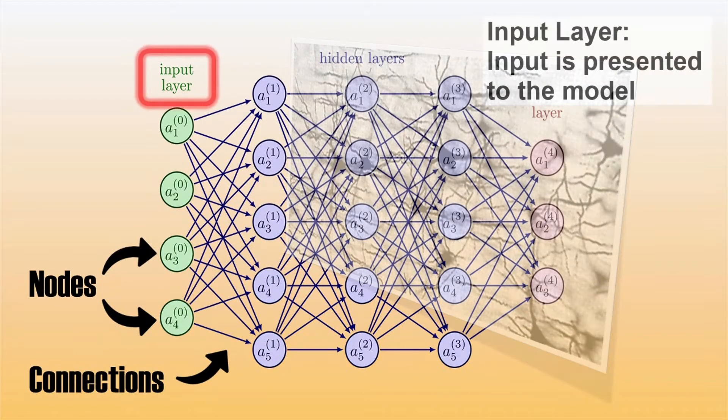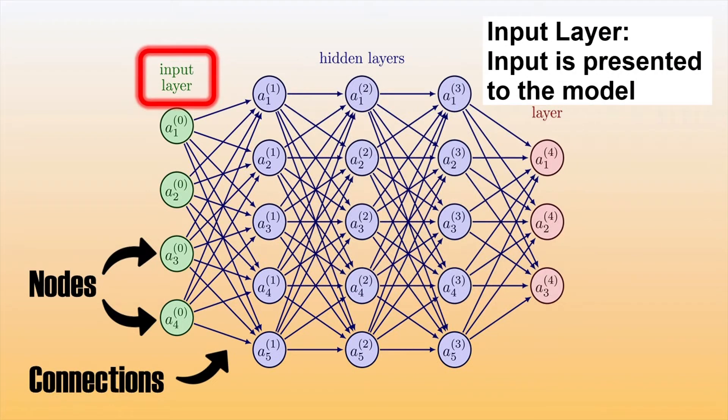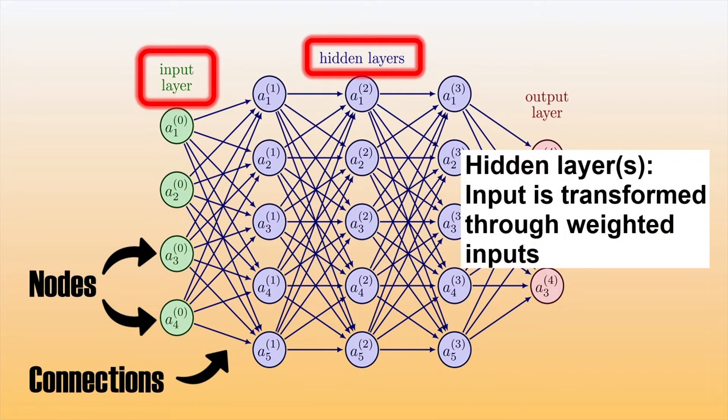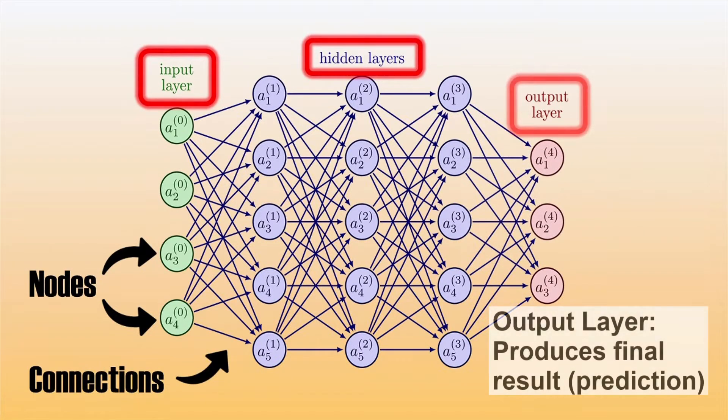The nodes are organized into an input layer where information comes in, one or more hidden layers where information is transformed, and an output layer where the final result is generated.